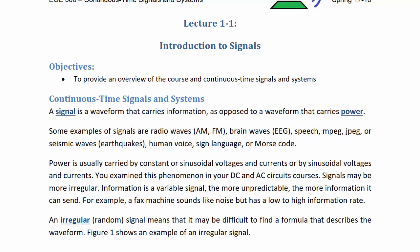Some examples of signals are radio waves such as AM or FM, brainwaves which are EEG, speech, MPEG, JPEG, seismic waves like for earthquakes, the human voice, sign language, or Morse code.